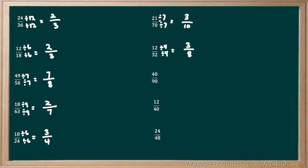Next we move on to 40 over 90. For this example we can either find our highest multiple or we can just get rid of the zeros, because getting rid of the zeros is the same as dividing the top and the bottom by 10. Once we get rid of our zeros we're left with 4 over 9. 4 over 9 cannot be reduced down any further, so 4 ninths is our final answer.